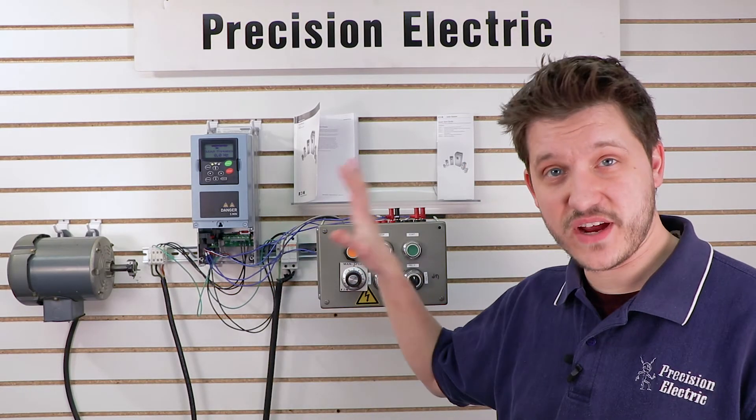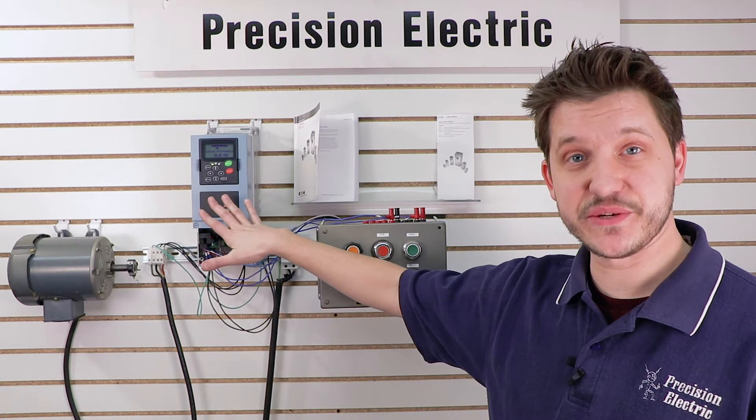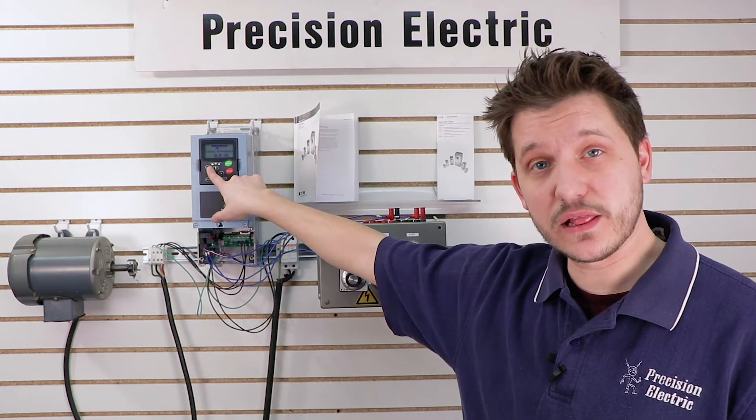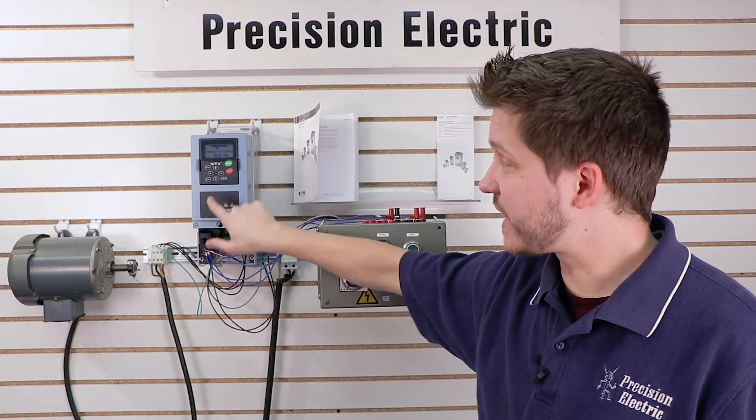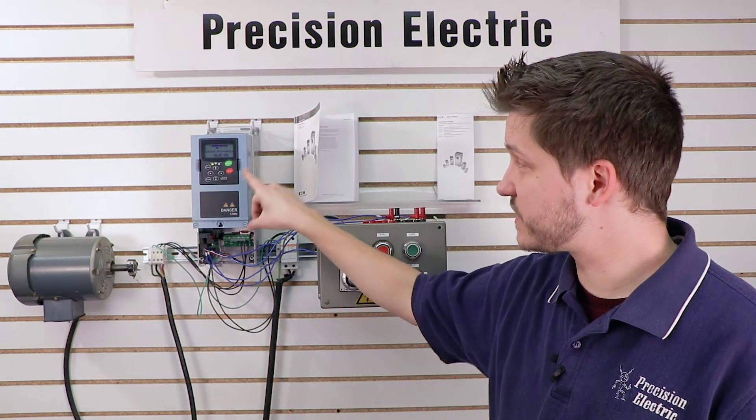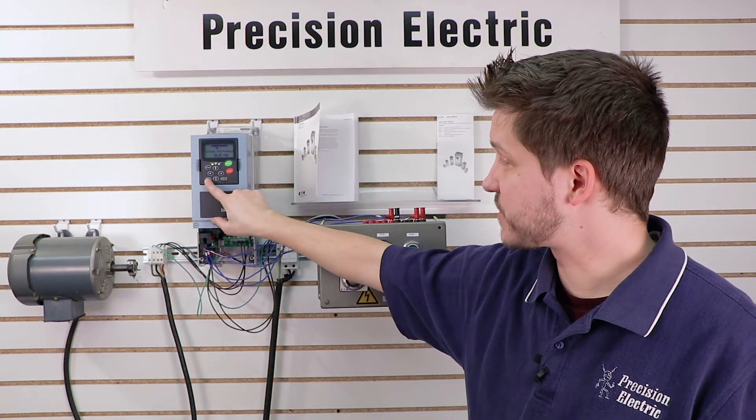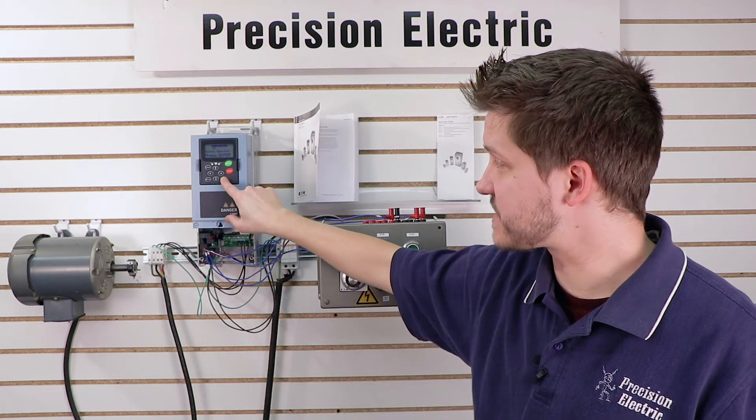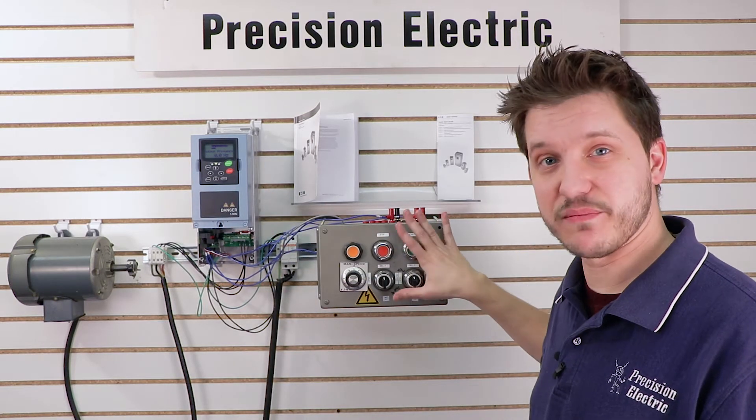Okay, so now that we're running and I've got it programmed, I've got it in operation mode, right now I'm still in local, so I need to switch from local back to remote, otherwise it's not going to look at my push button station. In local it only looks at the keypad, so I'm going to press local remote, and I'm going to press enter, which will switch to look at my terminal strip.